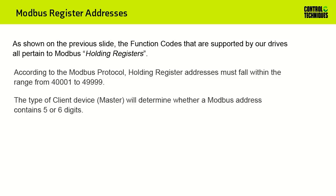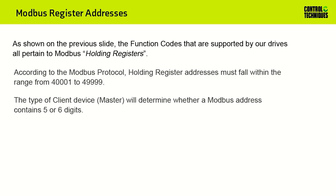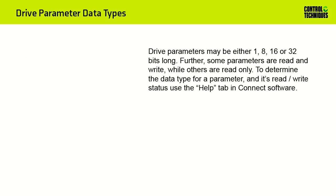The type of client device or master that you are using will determine whether a Modbus address contains either 5 or 6 digits. Modern Modbus clients can accommodate 6-digit addressing; holding register addresses may range from 400001 to 499999. Drive parameters may be either 1, 8, 16, or 32 bits long.